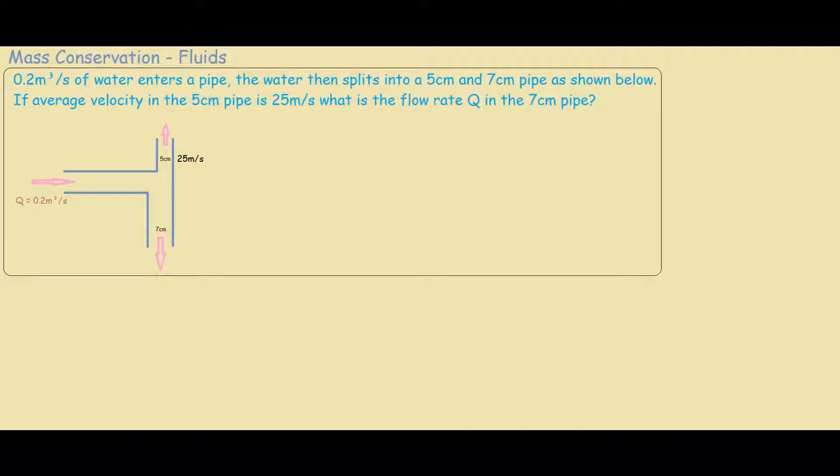We have this mass conservation problem where 0.2 meters cubed per second of water flows into the pipe and then splits off into a T-junction where other pipes are 5 centimeters and 7 centimeters as shown in this diagram.